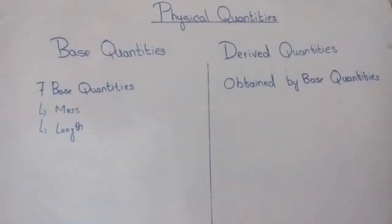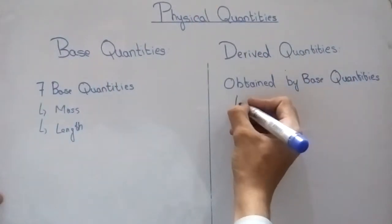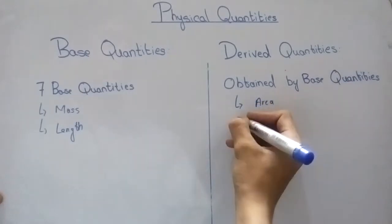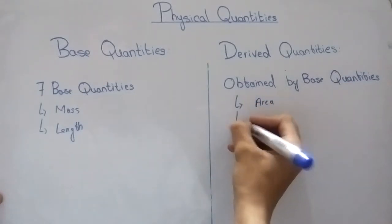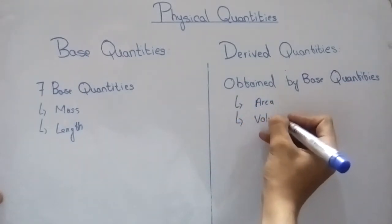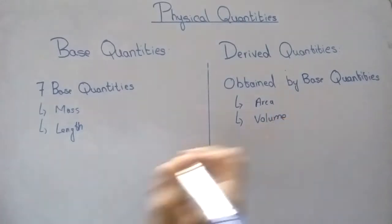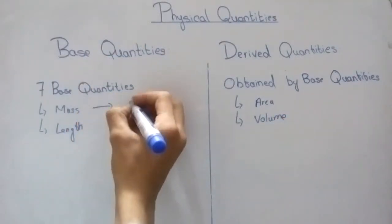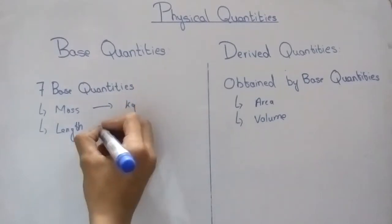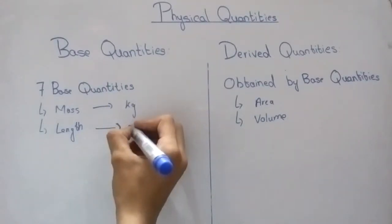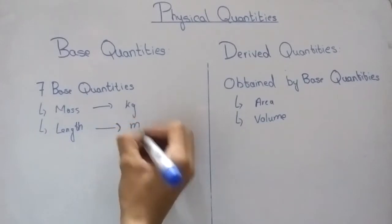In derived quantities, examples include area and volume. For the base quantities, mass has the unit kilogram and length has the unit meters.